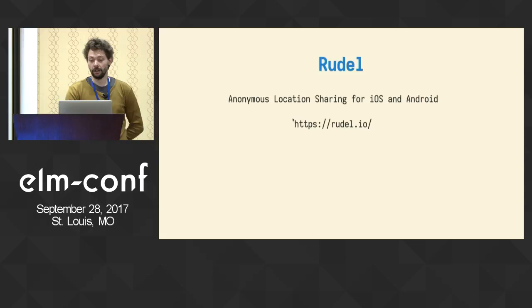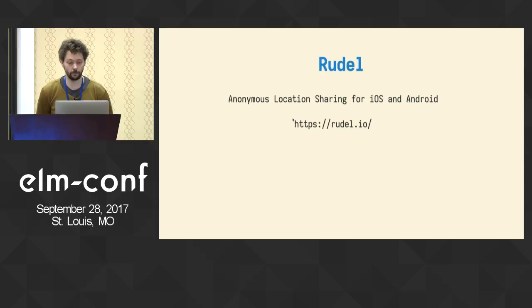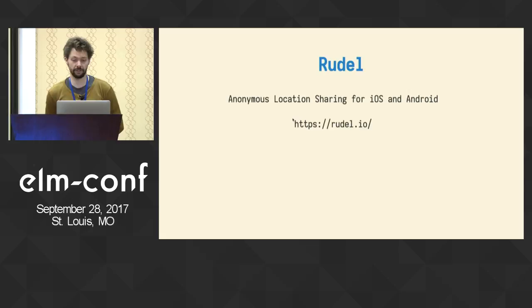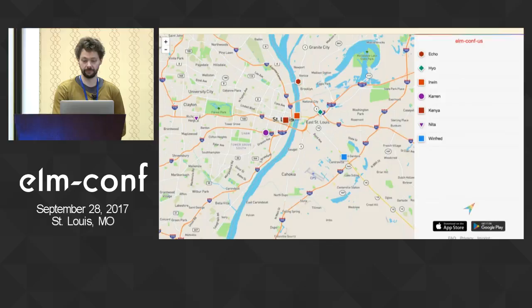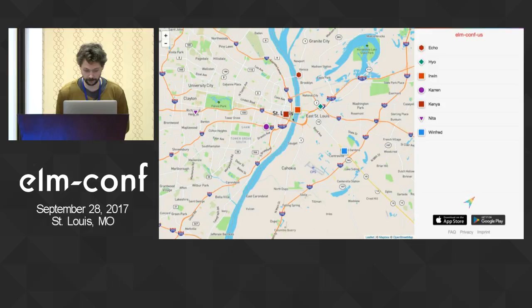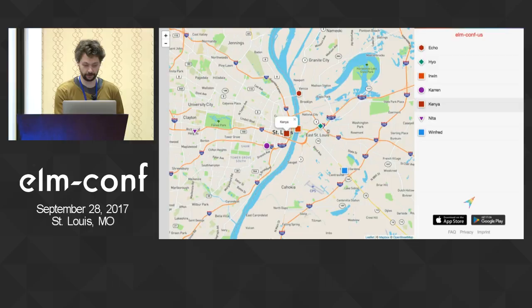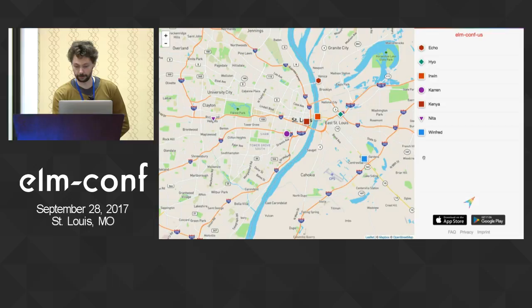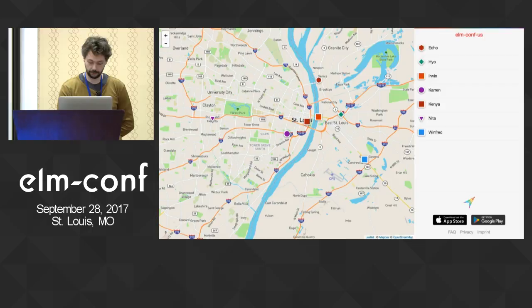So what motivated me to build a slippy map library in Elm? We have this app called Rudel. It lets you anonymously share locations between friends. It's a native app for iOS and Android, and it also has a companion web viewer. You have your list of friends on the site and they are driving through St. Louis, and you can just click on the people, follow those, and share a public URL to see it. This site is written in Elm.